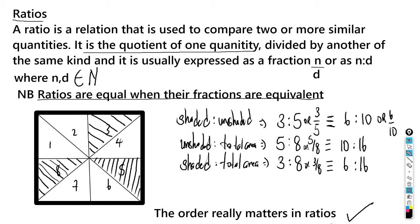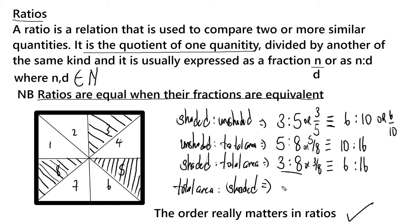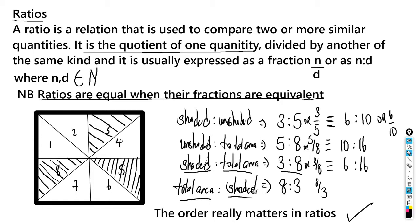The order really matters in ratios. For example, total area to shaded region would be eight to three, or eight over three — that is not the same as shaded to total area, which is three to eight. Three over eight and eight over three are not the same. Always follow the order given in the question.